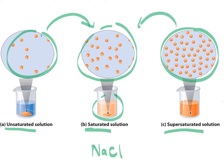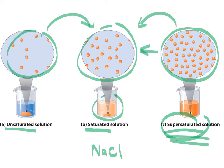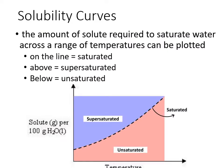A supersaturated solution is going to want to release some of that solute. Ions would crystallize as an ionic crystal, molecules might precipitate out, and gases might bubble out of solution. But for a moment in time — perhaps a long moment — there could be more solute in the water than the water wants to hold. That is a supersaturated solution, and it will try to get back to a saturated solution by letting go of some of that solute.